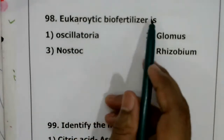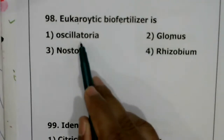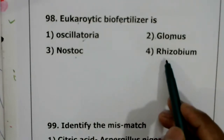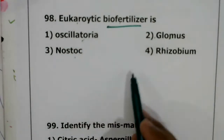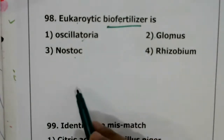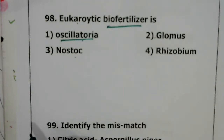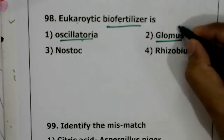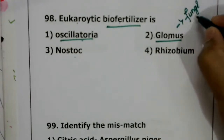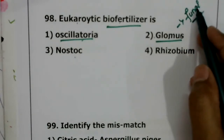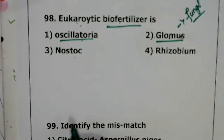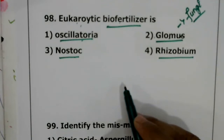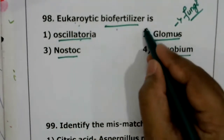Question 98: eukaryotic biofertilizer. All of Oscillatoria, Glomus, Nostoc, and Rhizobium are biofertilizers that increase soil fertility. They asked specifically about eukaryotes. Oscillatoria belongs to cyanobacteria — prokaryotes. Glomus is a type of fungi (mycorrhiza) and belongs to eukaryotes. Nostoc is cyanobacteria — prokaryote. Rhizobium is a bacterium — prokaryote. So the eukaryotic biofertilizer is Glomus.